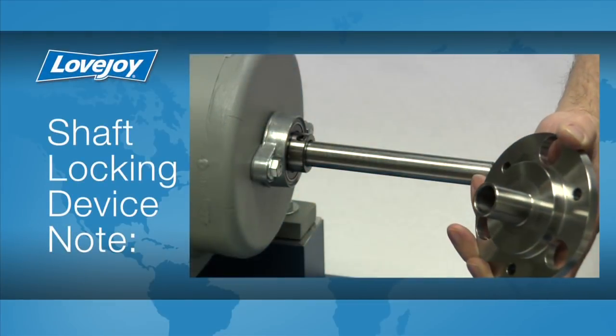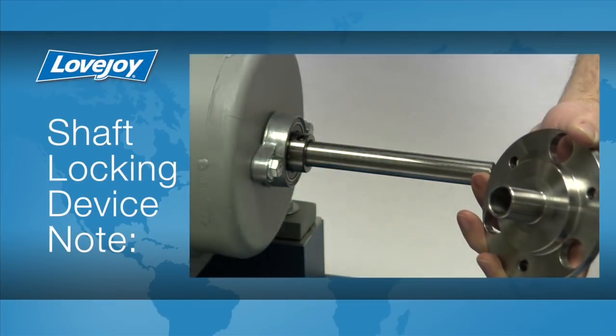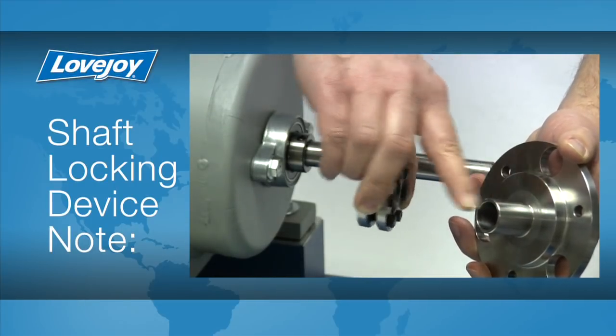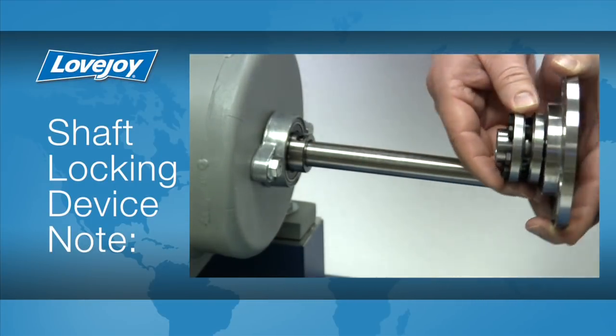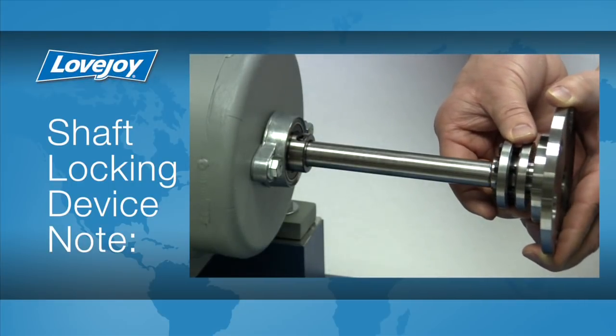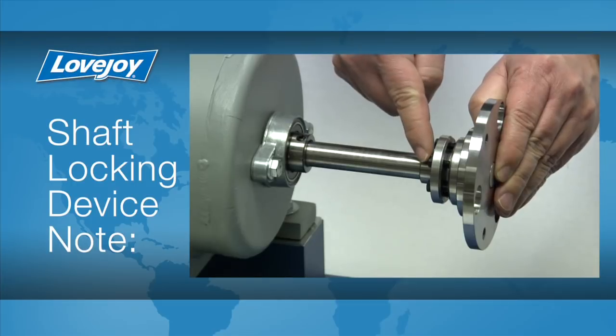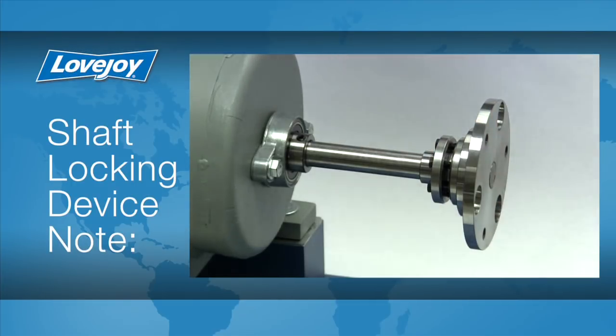When installing a disc coupling where one or both hubs are to be secured on the shaft using an SLD, or shaft locking device, locate the SLD on the recess machined into the exterior surface of the hub. Then slide the hub on the shaft to the desired location and tighten the SLD bolts using the procedures and tightening torque specified in the SLD installation guide. The SLD is a keyless alternative to a clamping style hub and allows for axial and rotational adjustments to be made after the coupling has been installed.